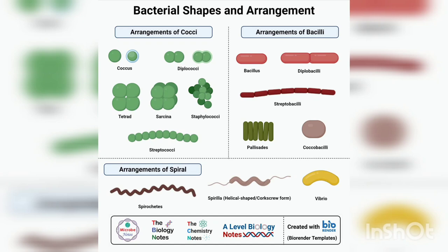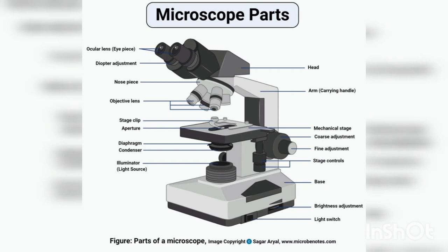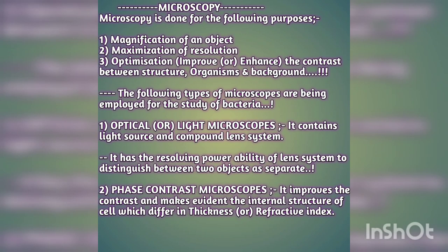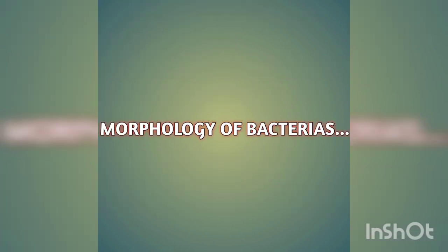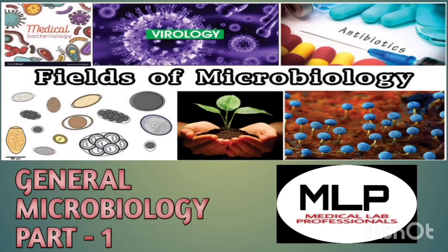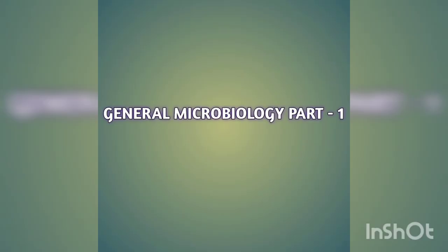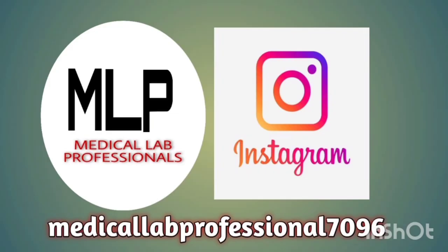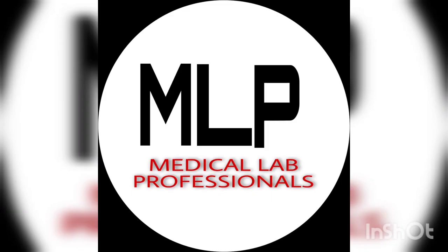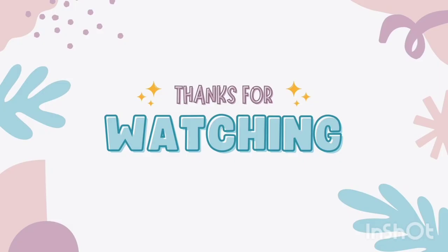In this video we discussed the parts of the microscope, microscopy and its different types, and the morphology of bacteria — cocci, bacilli, spiral, and vibrio — as observed under the microscope. This has been a brief introduction to General Microbiology. I hope you liked this video. Please like, share, and subscribe to my channel. Keep supporting me — I will be back with Part 2 of General Microbiology soon. Thank you, friends!